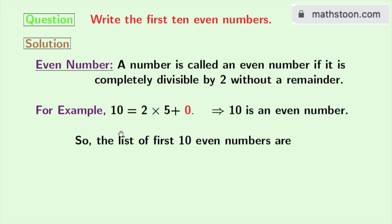So the first 10 even numbers as per this definition are 2, 4, 6, 8, 10, 12, 14, 16, 18 and 20.